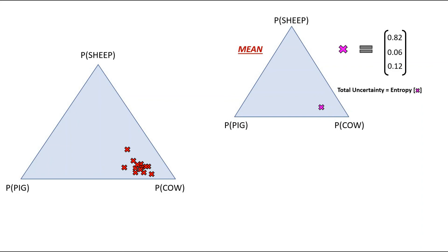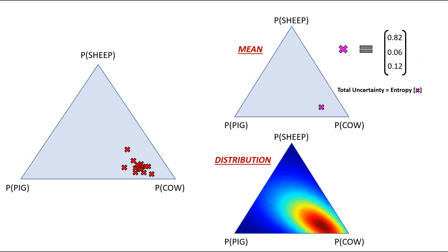But the fact that we have an ensemble of points instead of a single point on the simplex means we can do better than just finding the total uncertainty. Instead of just plotting the mean, we can fit something like a Gaussian distribution on top of the ensemble members on the simplex.